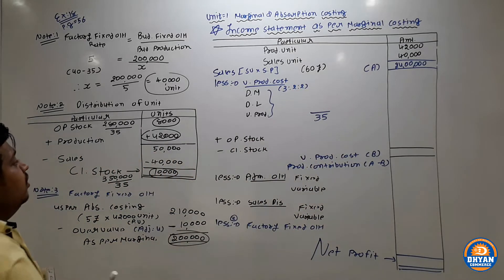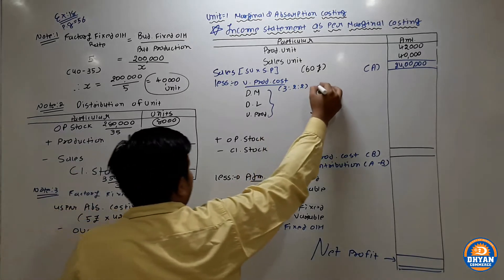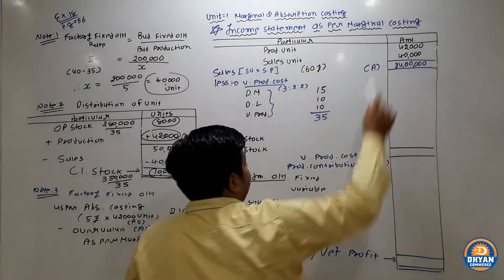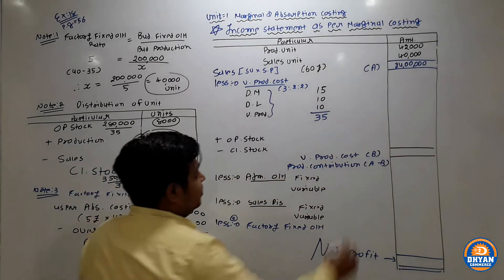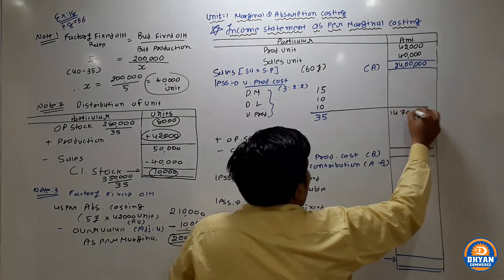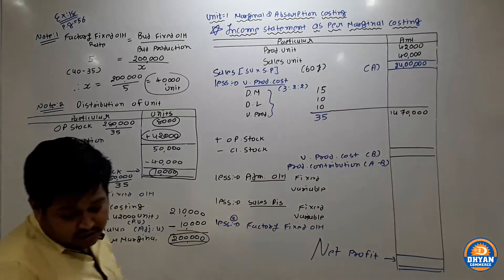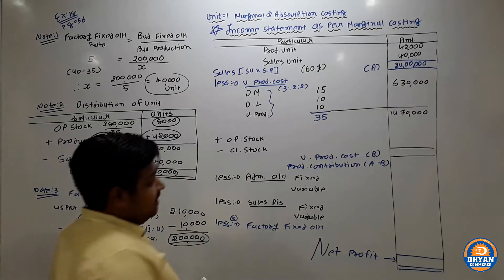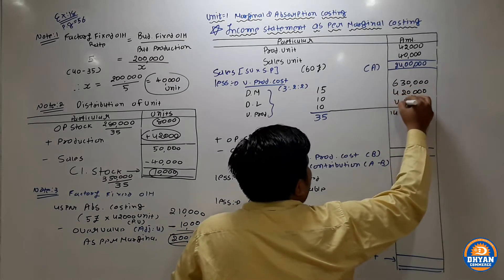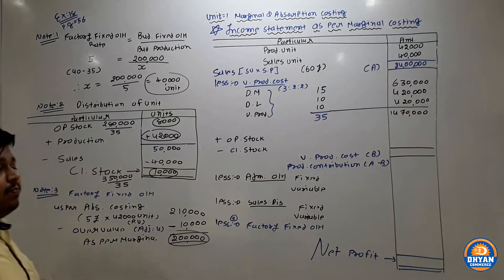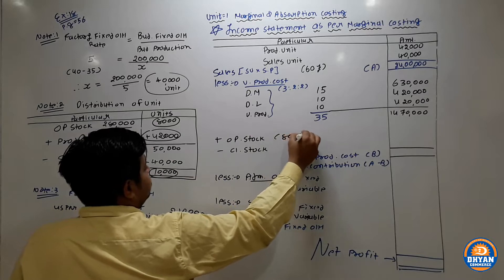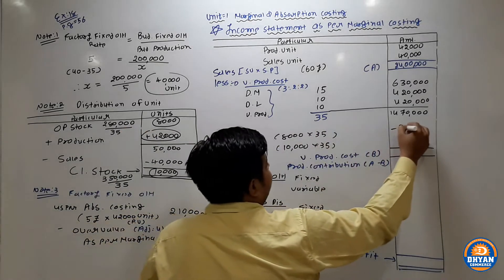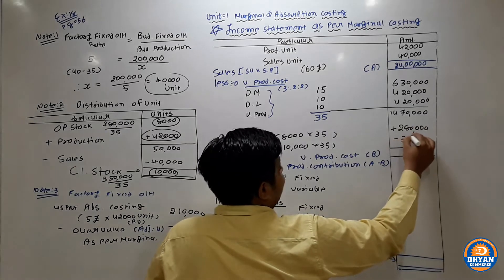Using ratio 3:2:2 summing to 7 parts (wait — ratio is 3:2:2 = 7, but marginal cost is Rs. 35 per unit). So direct material = 15, direct labor = 10, variable overhead = 10 per unit. Multiply by 42,000 production units. Variable production cost total = Rs. 14,70,000. Then add opening stock (8,000 × 35 = Rs. 2,80,000) and subtract closing stock (10,000 × 35 = Rs. 3,50,000).